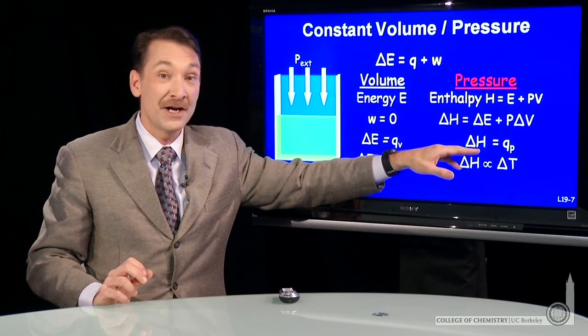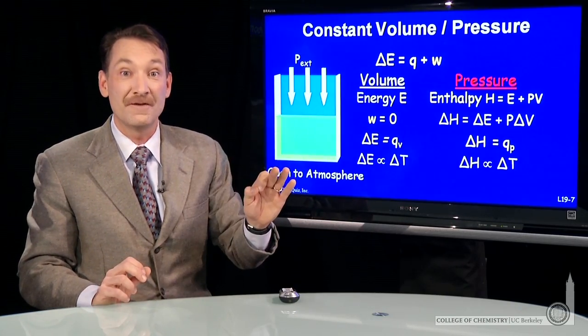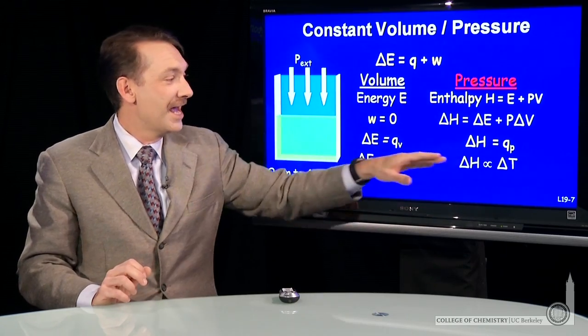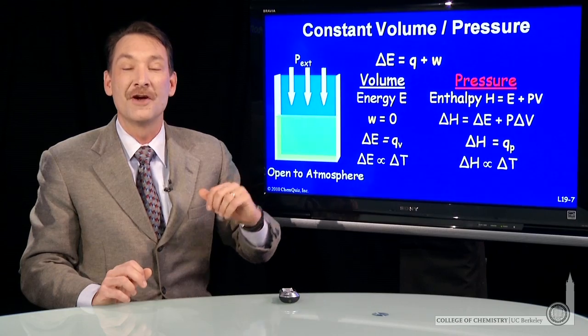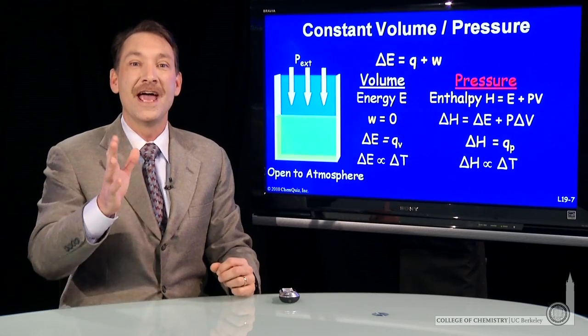Or the constant pressure heat evolved is the enthalpy change, which is a new state function related to the energy that we'll use in our chemical reactions. And that's proportional to an energy change for an ideal gas as well. Constant volume, constant pressure, energy changes.